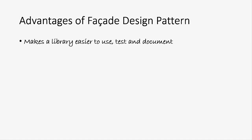Let's discuss a few advantages of the facade design pattern. First of all, it makes a library much easier to use, test, and document because the interface to the library is very simple. Please keep in mind that the total number of interactions between the facade and the class library's classes remains the same. We could refactor the code and design to reduce dependencies by introducing a factory pattern, but in this example we are really interested in simplifying the interface between the client and the library by introducing a facade.